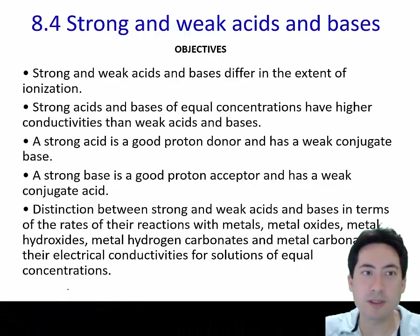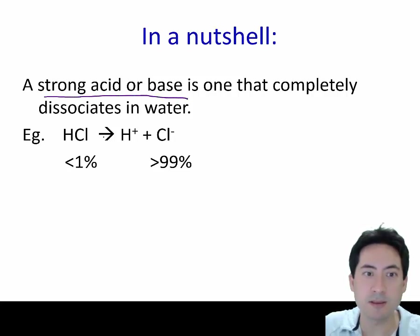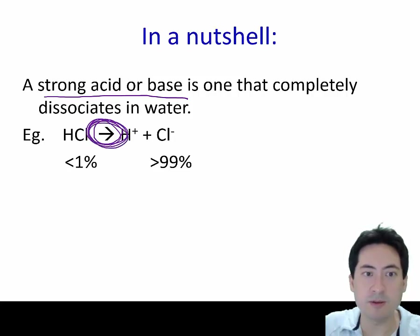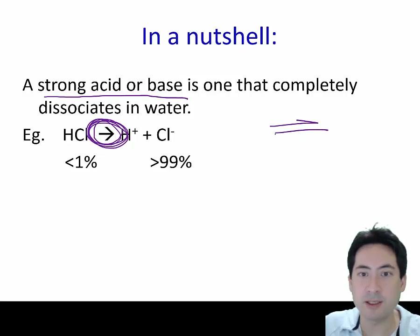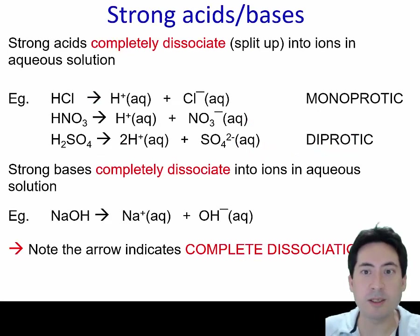Here are the objectives for lesson 8.4: strong and weak acids and bases. The simple definition for the difference between strong and weak acids and bases is that strong acids and bases completely dissociate — make sure you use a single arrow for this. For weak acids and bases, they do not completely dissociate and so they form an equilibrium — make sure you use a double arrow here.